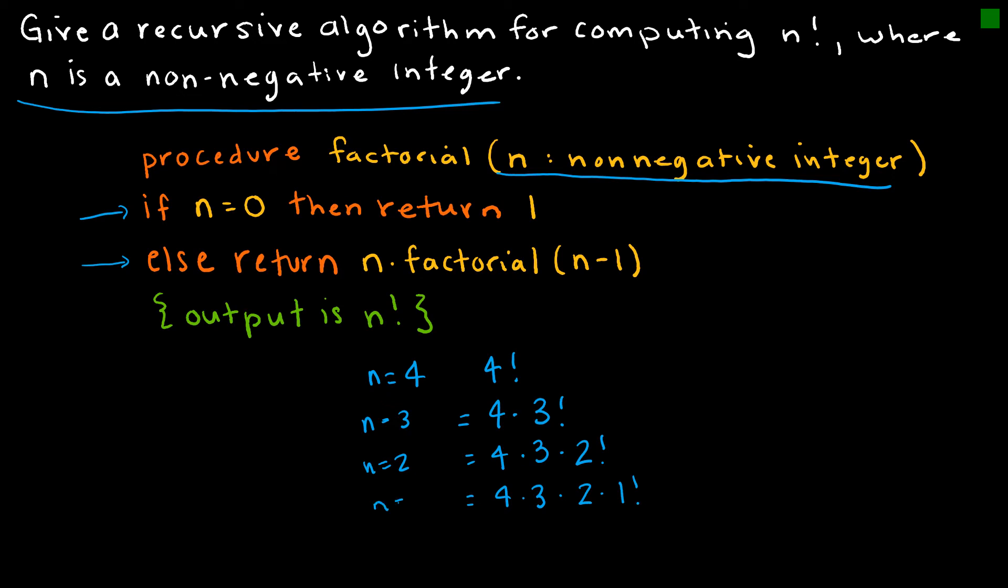And then my next step is going to be to take 4 times 3 times 2 times 1 times 0 factorial. Now, what's 0 factorial? Again, now I've made it. If n equals 0, then I'm returning the value of 1. So really, this is just telling the computer to take 4 times 3 times 2 times 1. And then, of course, times 1, which doesn't really matter. So that would be how the algorithm works.